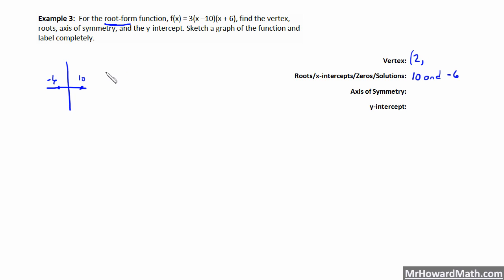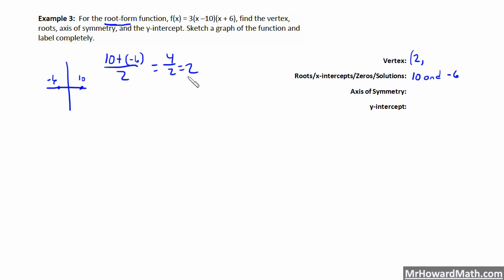The other way to find the x-coordinate is to average 10 and negative 6: take 10 plus negative 6 and divide by 2. That gives us 4 over 2, which equals 2. If they give you weird decimal values, just take the average and that will give you the x-coordinate of the vertex.